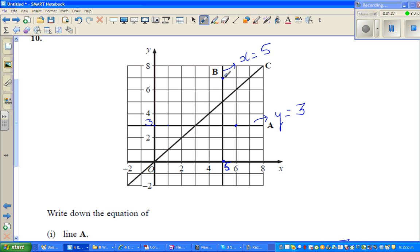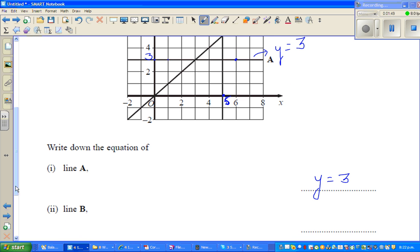Because each point, so this point would be 5, 7, this point would be 5, 6, and so on. So all the points correspond to 5 on the x-axis. So we can say the line B is x equals 5.